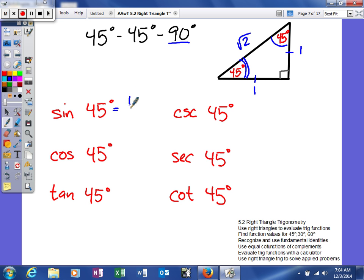So we'll just use that one. So we'll say the opposite side is 1. The hypotenuse is the square root of 2. When you multiply the top and the bottom by the square root of 2, you get the square root of 2 over 2.